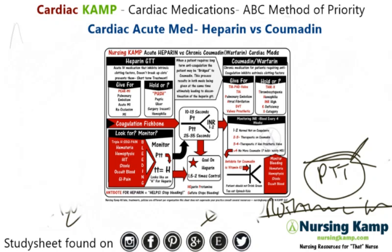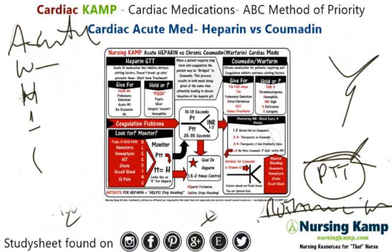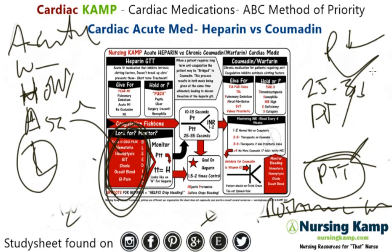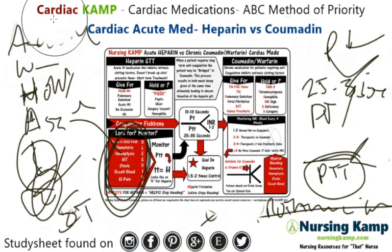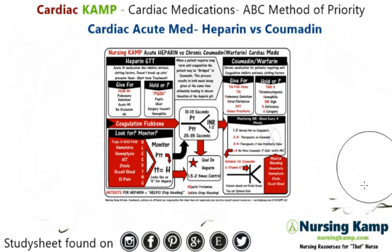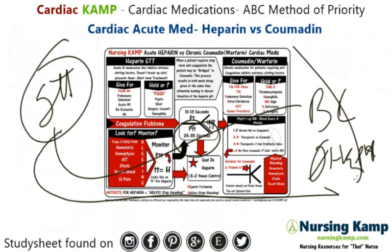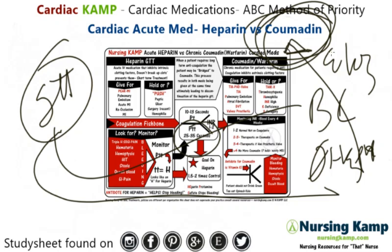Quick AWHAAL review on heparin. How does it work? It works in the clotting cascade. When do you hold it? When the PTT is greater than two times normal or there are signs and symptoms of bleeding. Assessment: monitor for signs and symptoms of bleeding. Labs: PTT, which should be 25 to 35 seconds normally. Eating: no concerns. Stands out: it's an acute medication requiring PTT monitoring. Available as sub-Q and IV, but drips are more acute. Patients cannot go home on heparin — they transition to Coumadin or Eliquis.